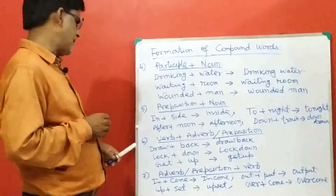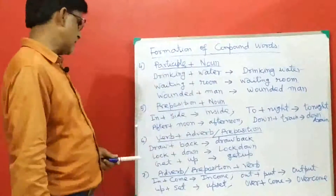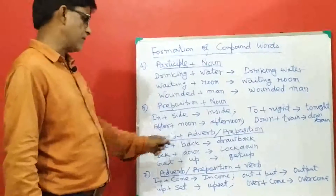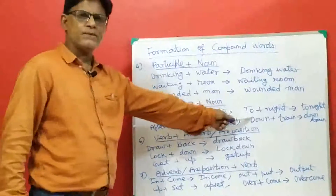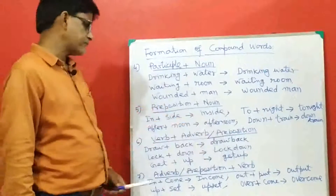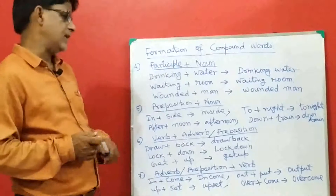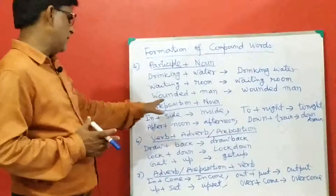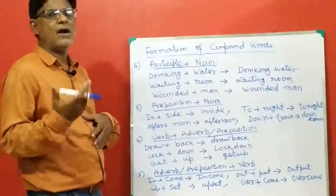Similarly, compound words are made by joining a preposition and a noun. For example, in plus side gives inside; in is a preposition. To plus night gives tonight; to is a preposition. After plus noon gives afternoon. And down plus train gives down train; down is a preposition and train is a noun.